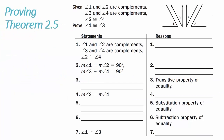Example 2: Proving Theorem 2.5. We are given that angle 1 and angle 2 are complements, angle 3 and angle 4 are complements, and angle 2 is congruent to angle 4. We want to prove that angle 1 is congruent to angle 3. We start with what we're given: angle 1 and angle 2 are complements, angle 3 and angle 4 are complements, and angle 2 is congruent to angle 4.